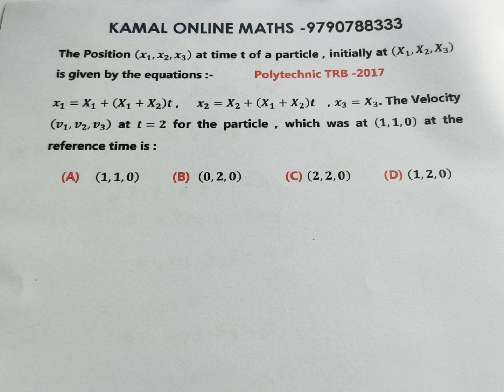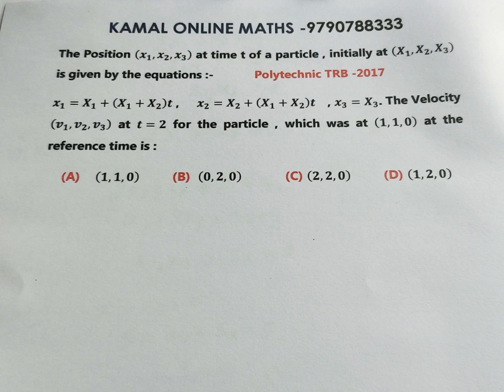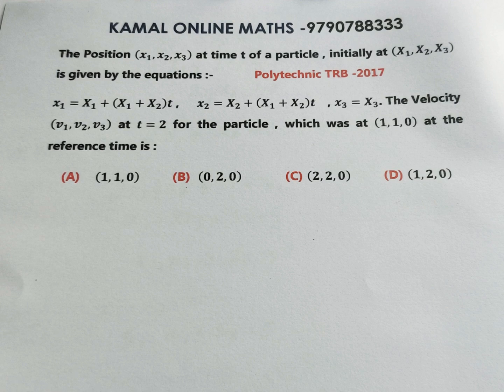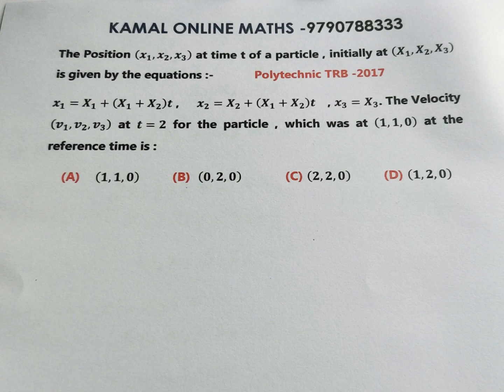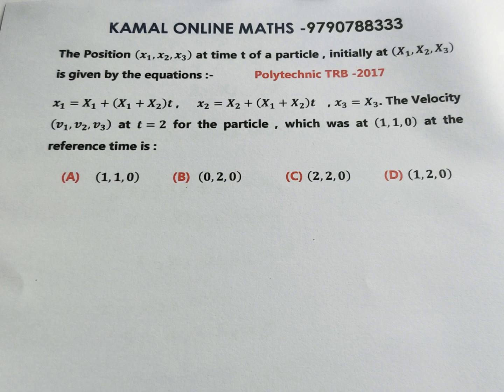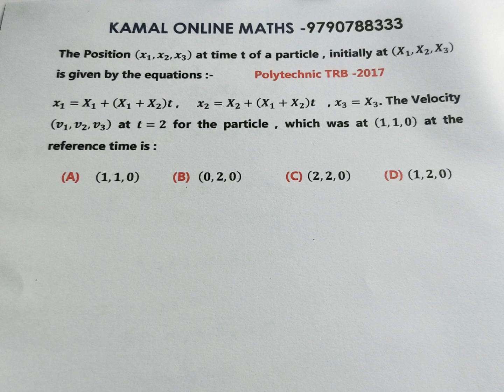For a particle, the position at time t is given by equations x1, x2, x3 in terms of capital X1, X2, X3. The initial position is capital X1, X2, X3, and small x1, x2, x3 represents the position at time t. The question asks for the particle velocity when the particle was at (1,1,0) at reference time.